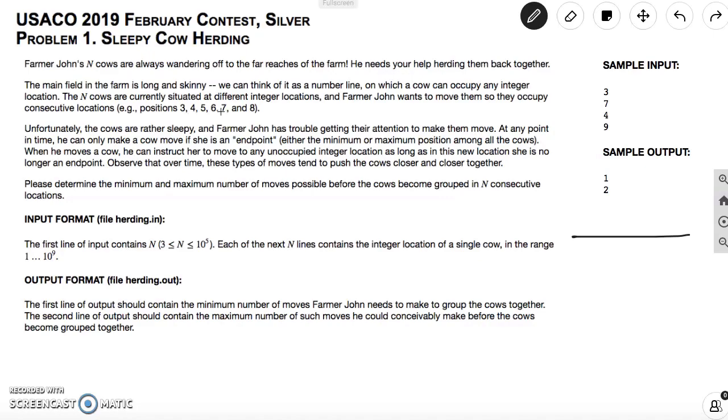The problem reads as follows. Farmer John's N cows are always wandering off to the far reaches of the farm. He needs your help herding them back together. The main field on a farm is long and skinny. We can think of it as a number line on which a cow can occupy an integer location. So here's a number line and cows can occupy locations on our number line.